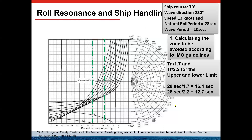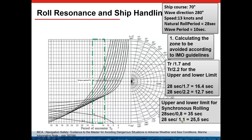For synchronic rolling, the limits are 0.8 and 1.1. Dividing the natural rolling period of 28 seconds by 0.8 gives 35 seconds, and by 1.1 gives 25.5 seconds — these are the upper and lower limits to be included in the diagram. Next, we enter the angle of encounter of 210 degrees into the diagram. Then the ship speed of 13 knots is plotted.